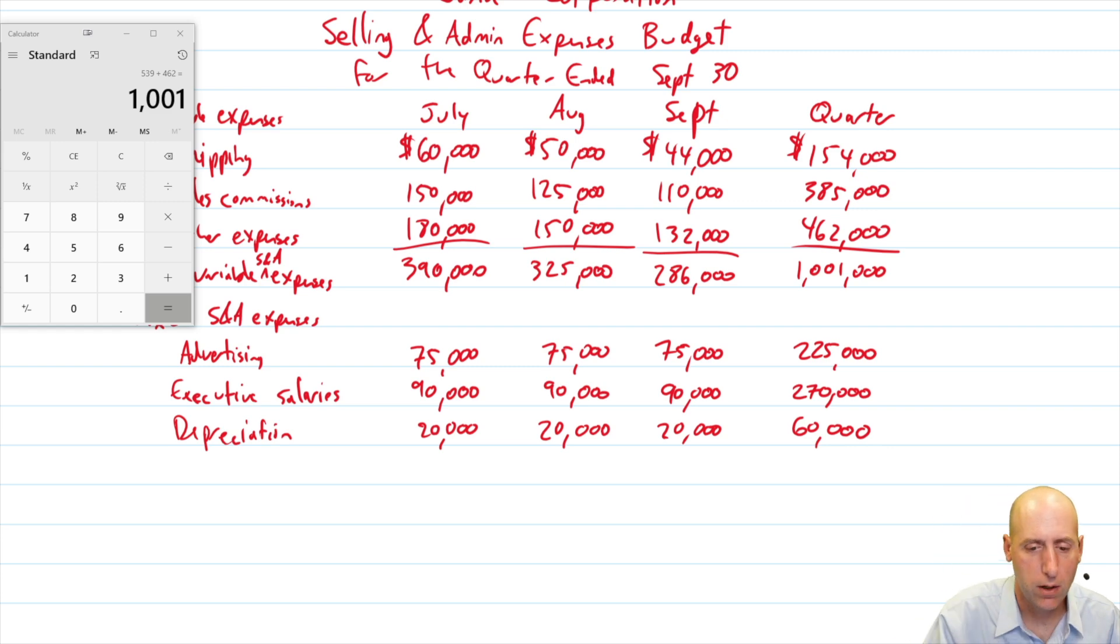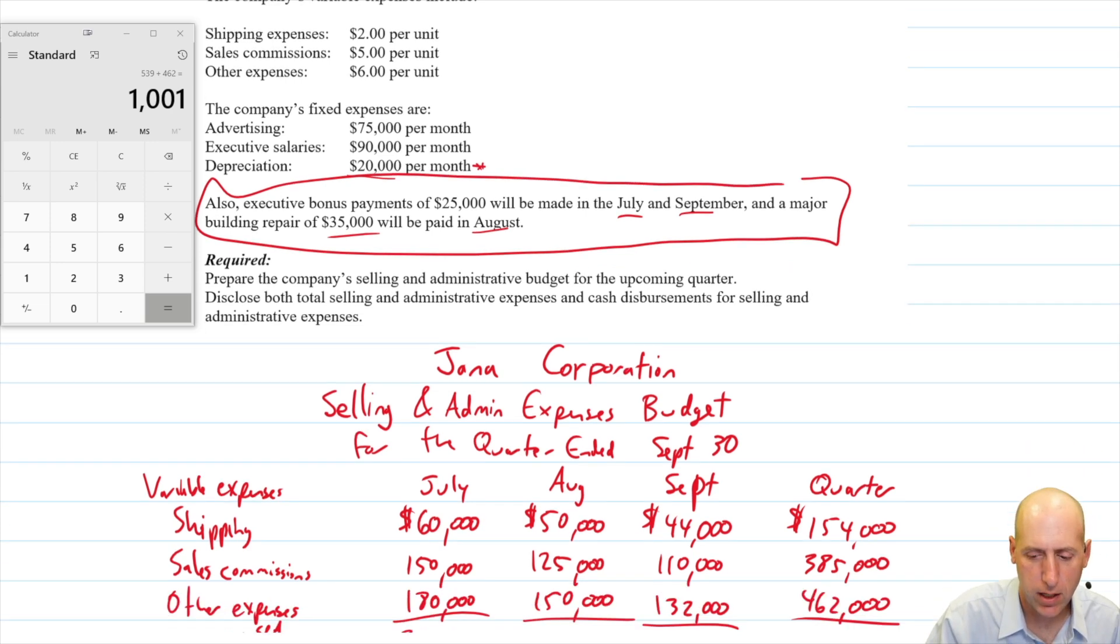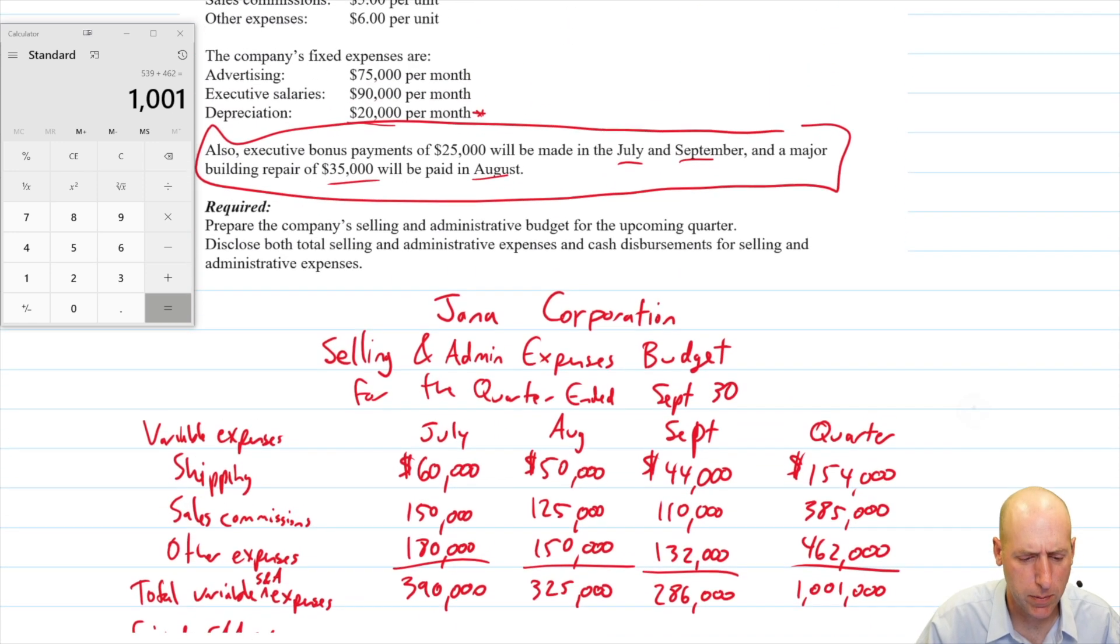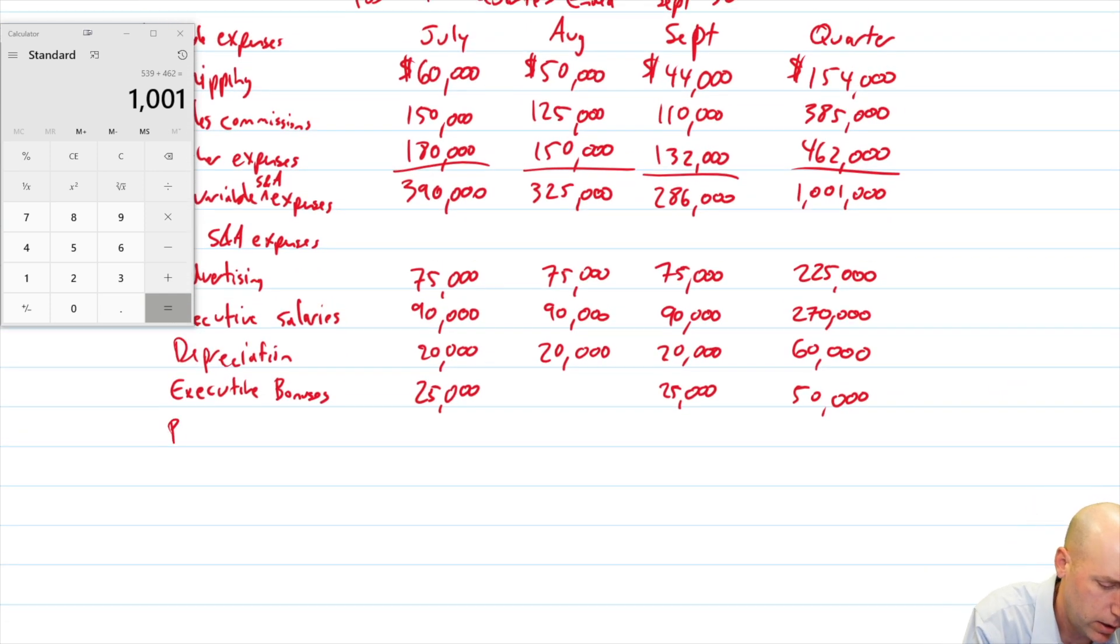Okay, so those are all of our fixed monthly expenses, but there's these other two kind of oddball ones at the bottom. We've got executive bonuses of 25 grand in July and September. Let's do that. July, 25 grand. September, 25 grand. And that's executive, oh my goodness. I'm having a hard time spelling executive. Executive bonuses. 25, 25 is 50. And last we had that special repair coming up. Major building repair. Building repair of 35. And that was in August.